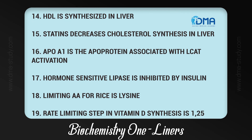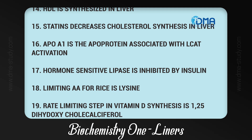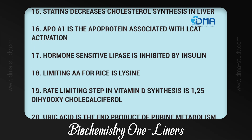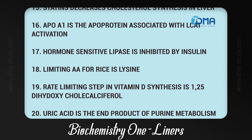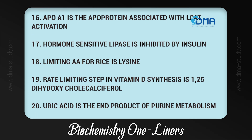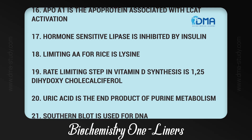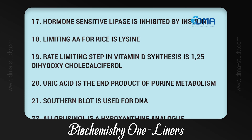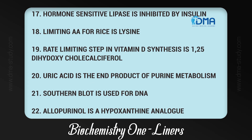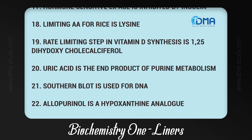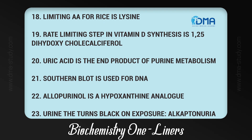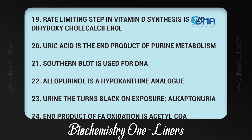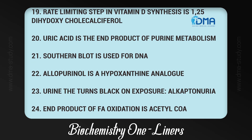19. Limiting amino acid for rice is lysine. 20. Rate-limiting step in vitamin D synthesis is 1,25-dihydroxycholecalciferol. 21. Uric acid is the end product of purine metabolism. 22. Southern blot is used for DNA. 23. Allopurinol is a hypoxanthine analog. 24. Urine that turns black on exposure.